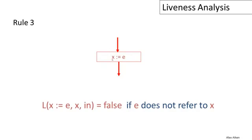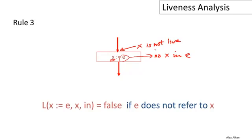A second case is when a statement writes the value of X. Here we have an assignment to X, and the rest of the statement does not refer to X — there is no X in E. In this situation, X is not live before the statement; X is dead before the statement. Why? Because we're overriding the value of X, so whatever value X had before this statement is never going to be read. The right-hand side doesn't refer to X, so immediately before the statement, the current value of X will never be used in the future.